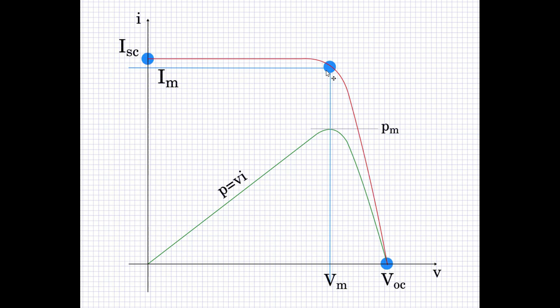This point we shall call the peak power operating point. It is very important in the choice and selection of PV cells. We would like to operate the PV cell at this operating point, which means the electronic load connected to the PV cell should behave in such a manner that the PV cell is most of the time operating in this region where it is capable of delivering the maximum power, thereby utilizing it to the fullest.